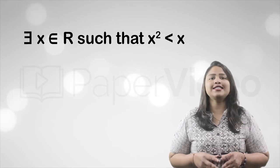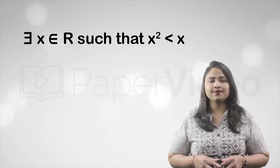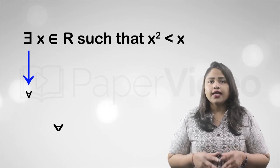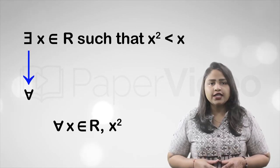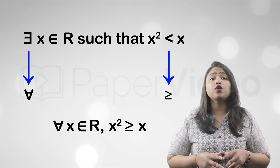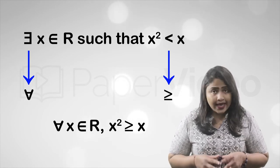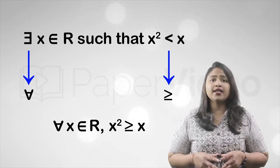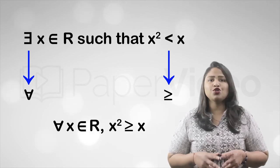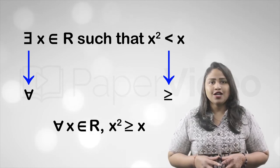Let us understand this concept with the help of some examples. Consider this statement. The negation of this statement will be: for all x belongs to R, x squared is greater than or equal to x. This is how we find the negation of a statement.